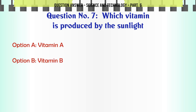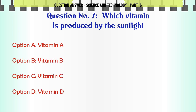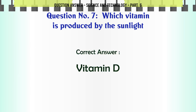Which vitamin is produced by the sunlight? A. Vitamin A. B. Vitamin B. C. Vitamin C. D. Vitamin D. The correct answer is Vitamin D.